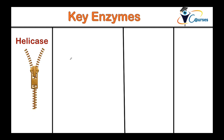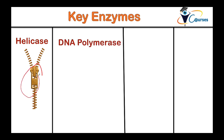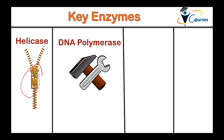The helicase — you can consider it like a zipper — is responsible for the unzipping of the DNA strands. Its action is like a zipper. Then we have the DNA polymerase, and this is like the builder. It builds the complementary DNA strand, so this is the enzyme responsible for building the DNA.